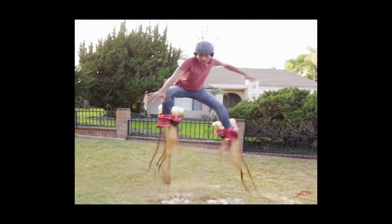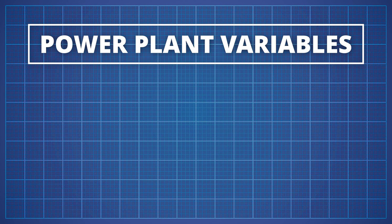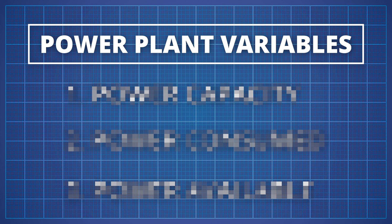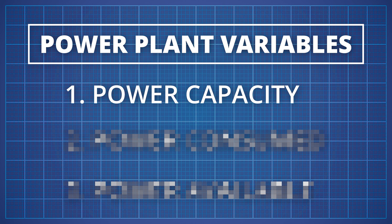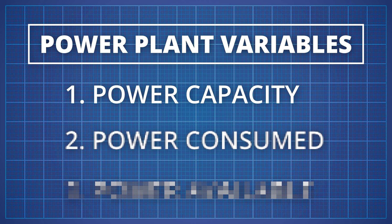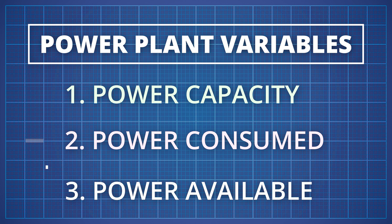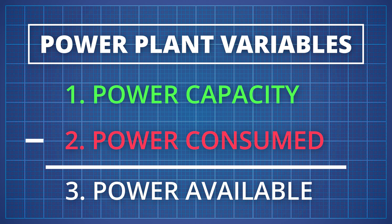Alrighty, strap in everyone, because it's time to write our power distribution algorithm. Let's start by defining some variables on our power plant and building classes. The power plant has three different variables. The first is the power capacity, which is the total amount of power our power plant can supply — this value doesn't change and is tuned based on the type of power plant. The second variable is the power consumed, which is the total amount of power at any given time that the city buildings are consuming. The third and final variable is the power available: by subtracting the power consumed from the maximum power capacity, we get the remaining amount of power available. Each building we supply power to will consume a little bit of the power plant's power until its capacity is exhausted.